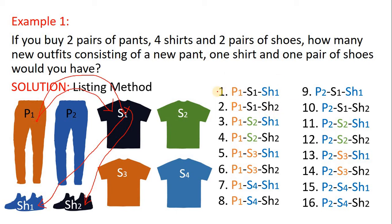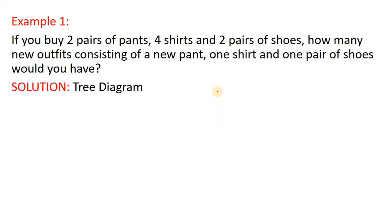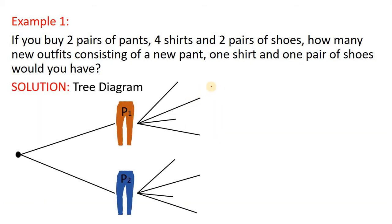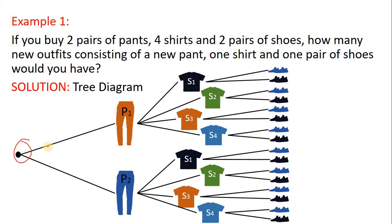This can also be solved using tree diagrams. This is your starting point — it branches out into two options. For your first action, you need to choose which pants to use. Then your second action, you need to choose which of the four shirts you would choose. If you have chosen the first pant, it branches to four. You need to choose which shirt to use, and then on each shirt it branches out to two.